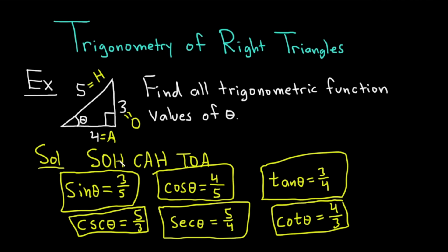So recap, if you use SOH CAH TOA when you have a triangle, you can find all the trig function values of that triangle, assuming you have all of the sides. All right, let's do something a little bit different.